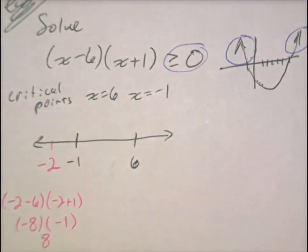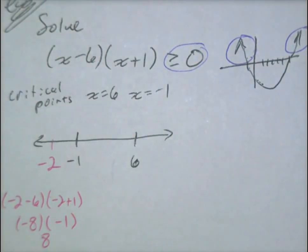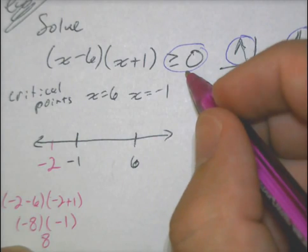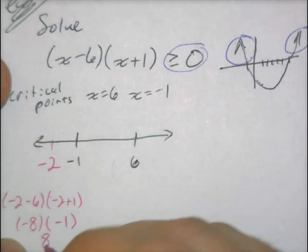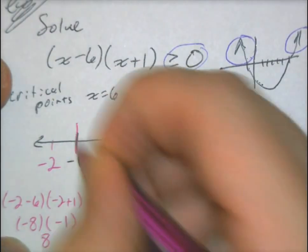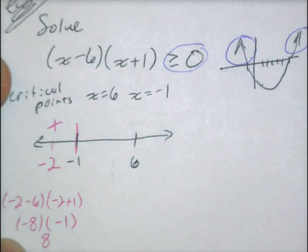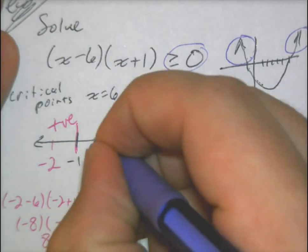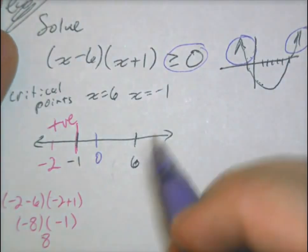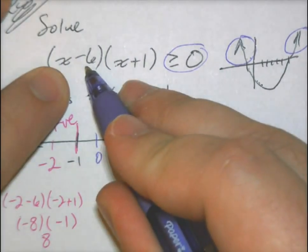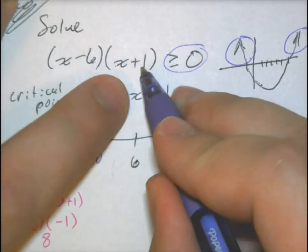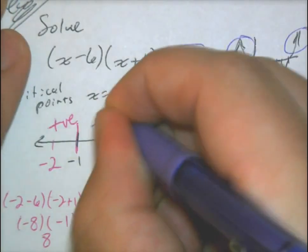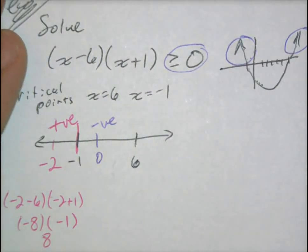When you get good at these, you won't have to think about what number it equals to. The biggest thing is whether it comes out positive or negative. Since this number is positive and my critical value changes things there, everything on that side will be positive. Between negative 1 and 6, I can test 0. That gives a negative number times a positive, which is negative. That's a negative interval.